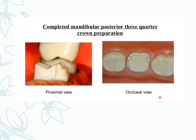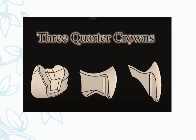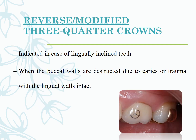Three-quarter crowns are not commonly done anymore. In this preparation, three-quarters of the tooth surface is prepared while leaving one surface — typically involving ledges on the proximal surfaces. The reverse and modified three-quarter crown is a variation of this preparation.